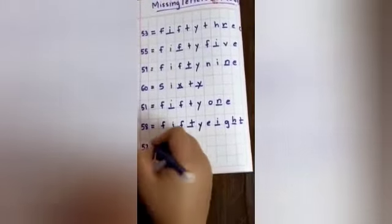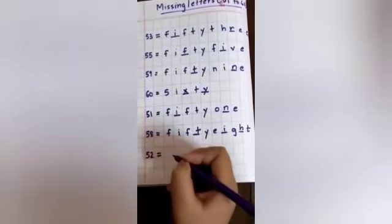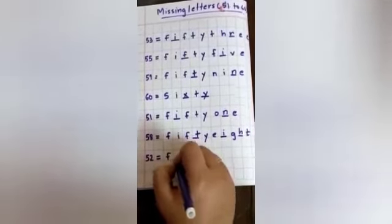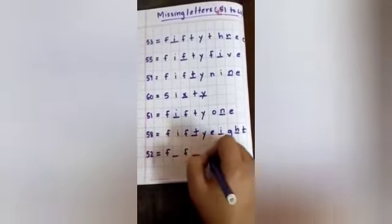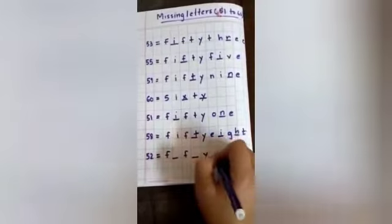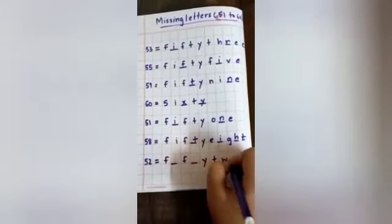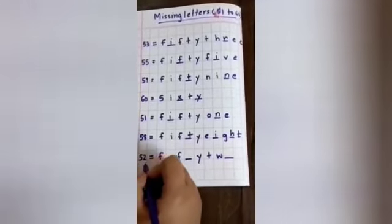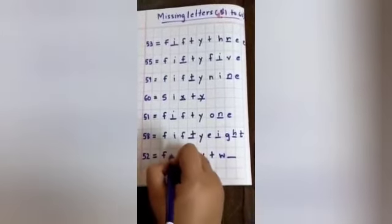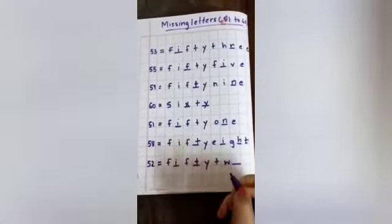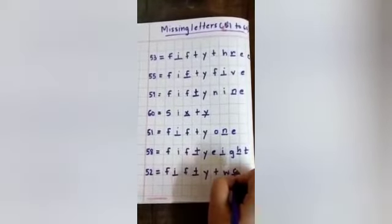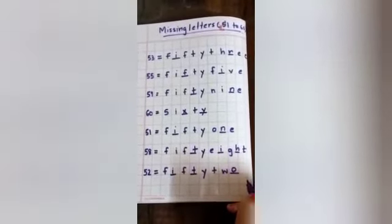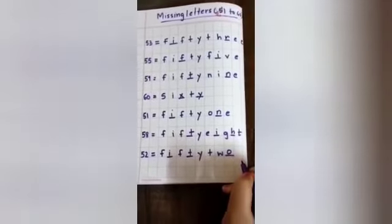52. 52 is equal to F-I-F-T-Y FIFTY T-W-O TWO. I hope you understood the concept of missing letters.